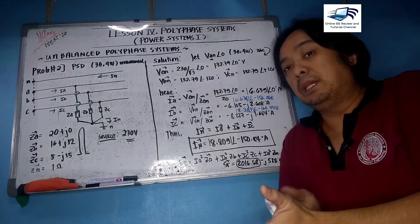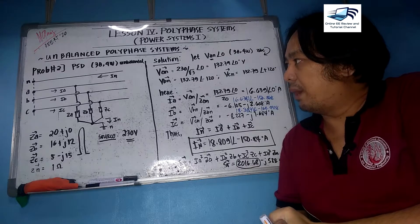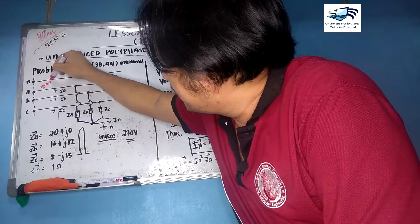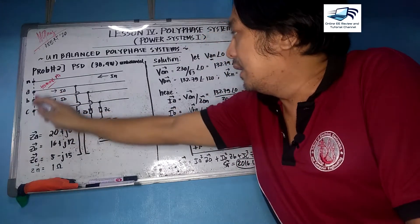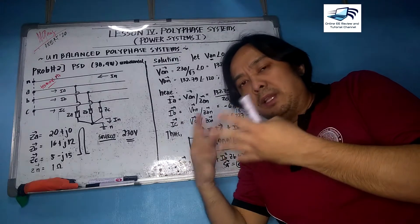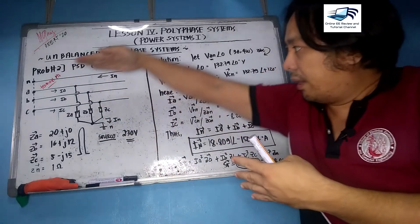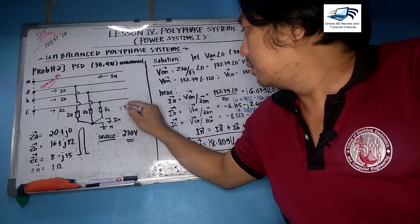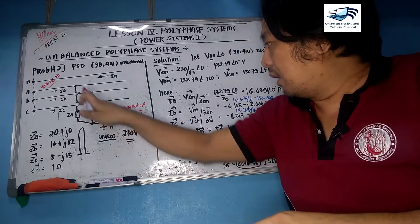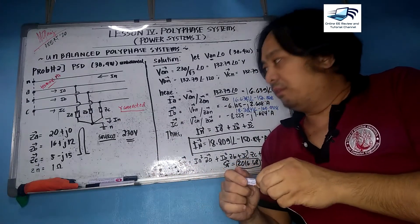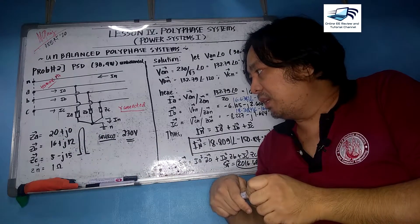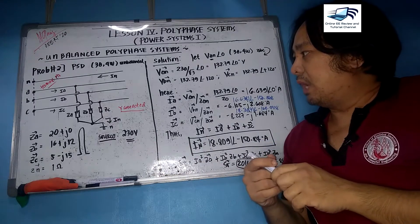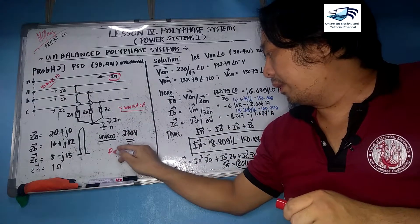The power system diagram for this three-phase four-wire system includes terminal points A, B, C, and the neutral. A Y-connected source is connected with impedances ZA = 20, ZB = 16+j12, ZC = 5−j15 ohms, and ZN = 1 ohm. The source is 230 volts and the goal is to find the neutral current and total power.